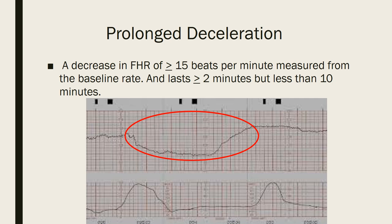A prolonged deceleration goes down at least 15 beats per minute from baseline and lasts greater than two minutes. If it lasts longer than 10 minutes, we should be on our way to the operating room. This is when you'll see several nurses and doctors entering the room, flipping and repositioning the patient, giving oxygen, turning off Pitocin, and giving a fluid bolus — doing all possible interventions to resuscitate the baby in utero rather than proceed to emergency C-section.